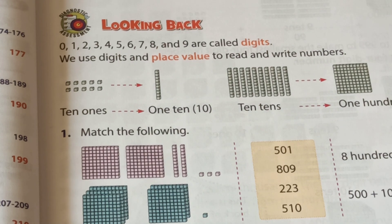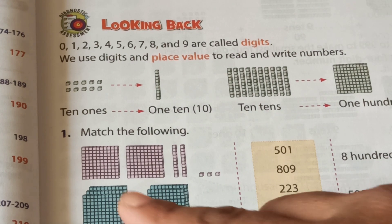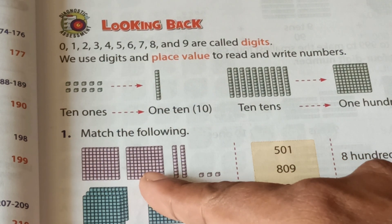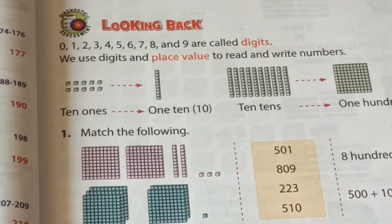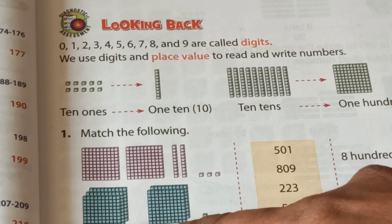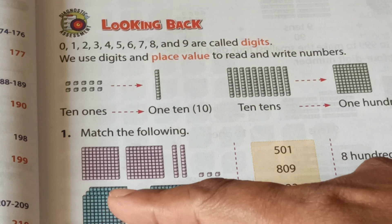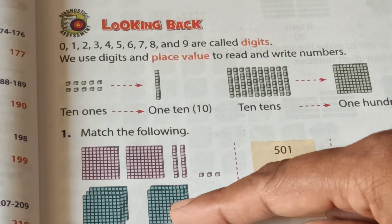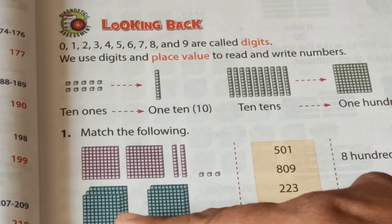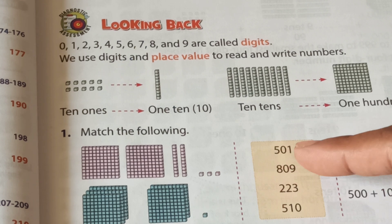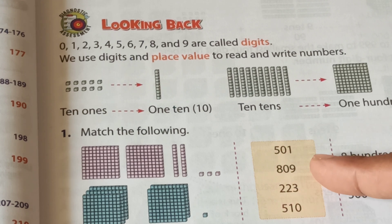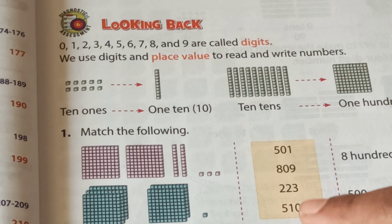Match the following. You can see here: 100, 200, 110, and 210. And 1, 2, 3 ones. Then: 100, 200, and 300. You can see here: 100 and 200 — and totally, how many? On the other side you can see numbers 501, 809, 223, 510.